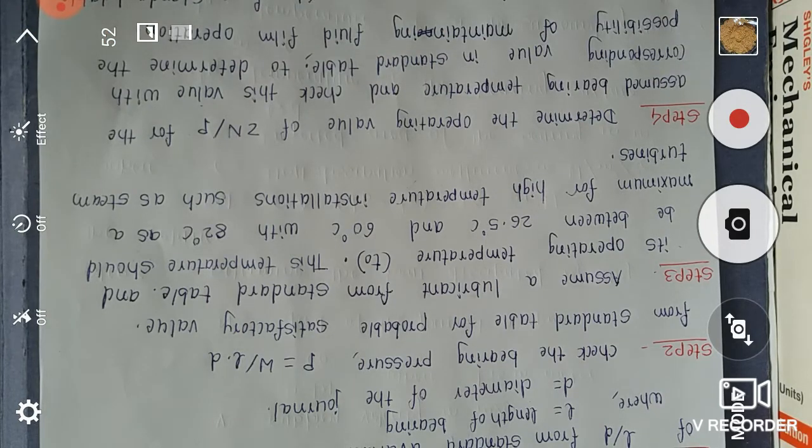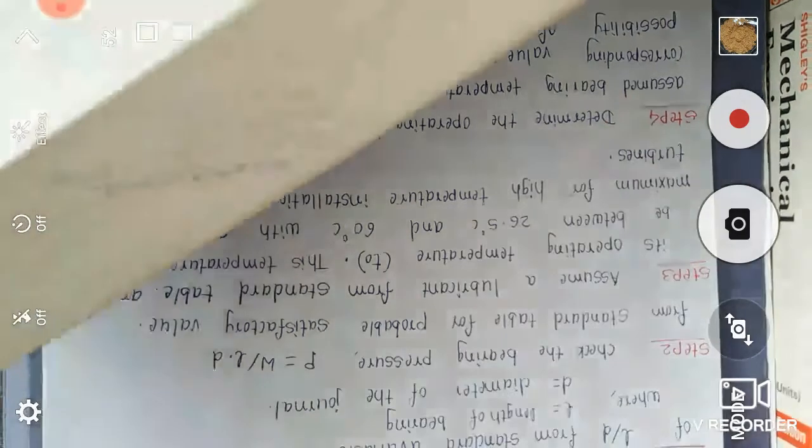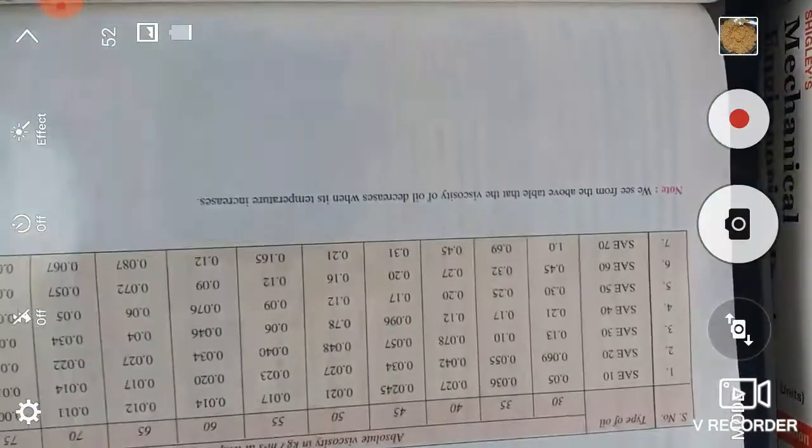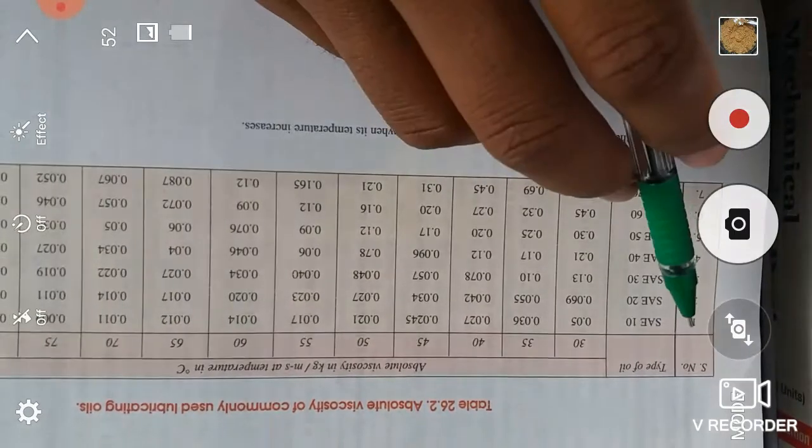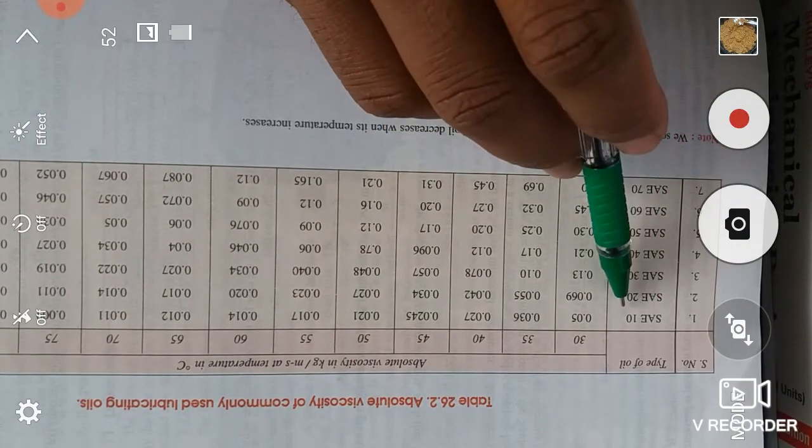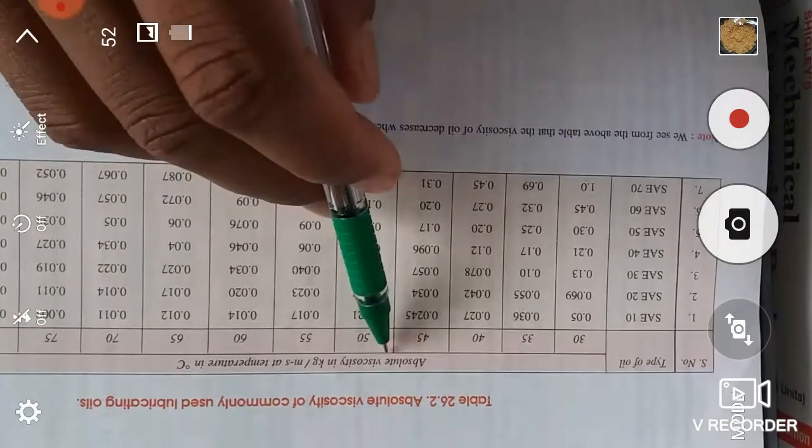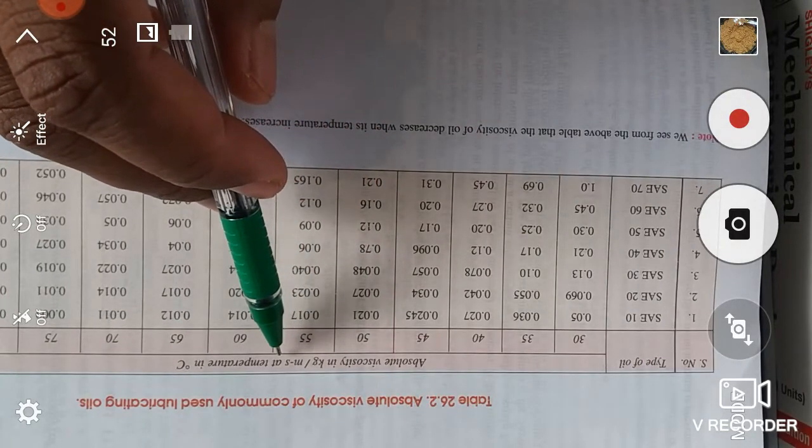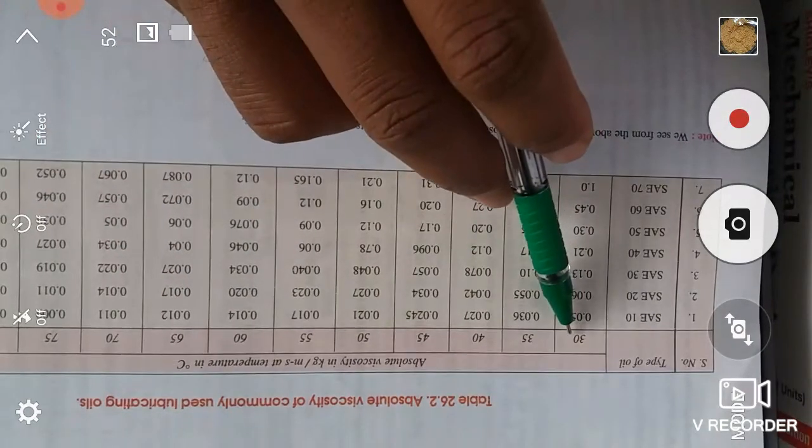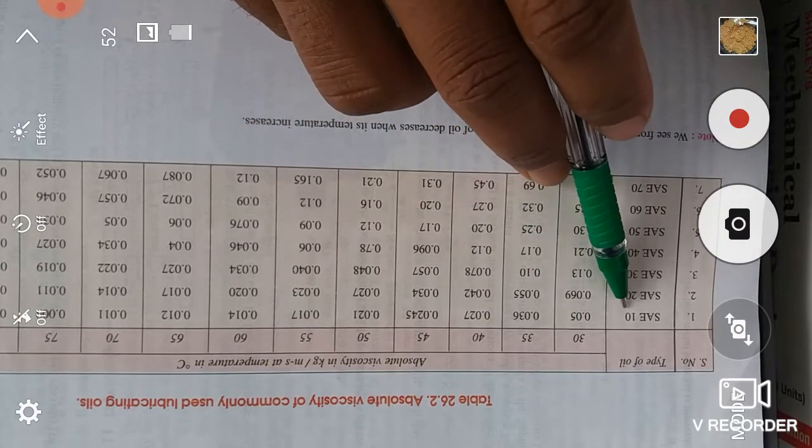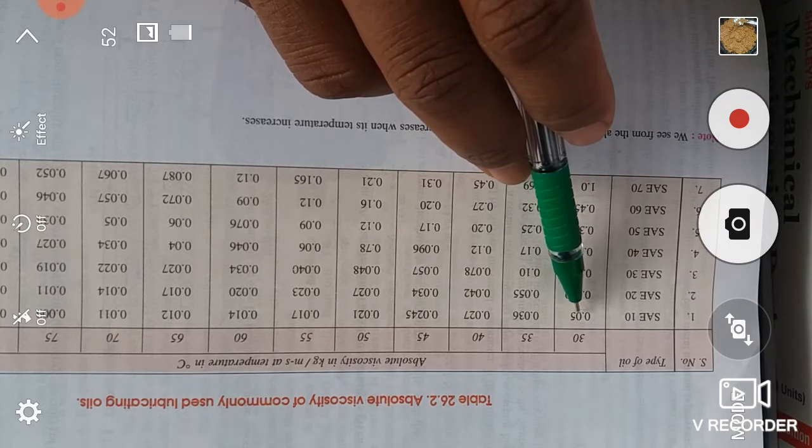For that purpose, if we see again one more standard table, this is the table for lubricating oil. These are types of oils SAE 10, SAE 20, up to SAE 70, with absolute viscosity in kilogram per meter second at temperature in degree Celsius. If we consider our temperature is 30 degree Celsius and our lubricating oil becomes SAE 10, then select absolute viscosity at 0.05 kilogram per meter second.